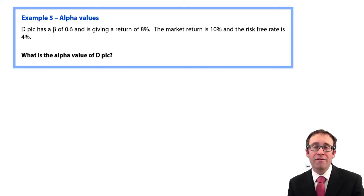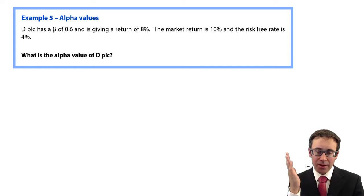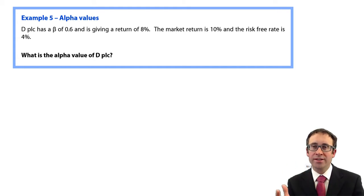And it's all our alpha values. Alpha values are looking effectively at the actual return an investment is giving you based upon capital growth and the dividend that you're receiving, and then comparing that to what you think you should get theoretically. So the simple difference between the actual return and the theoretical return is the alpha value. We work out the theoretical compared to the actual, which would have to be given to us in the question and you get the difference.